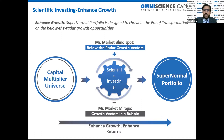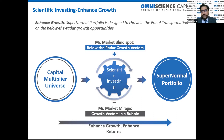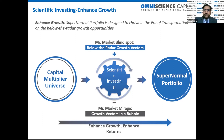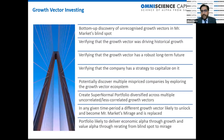How does this growth happen? The growth vector is a very interesting thing. While you're holding, as Mr. Market realizes the opportunity, the growth vector goes into a bubble — it becomes Mr. Market's mirage — and we are exiting out of it and replacing it with another growth vector.